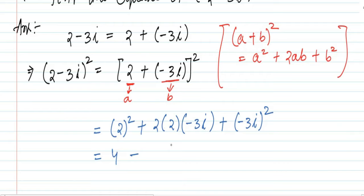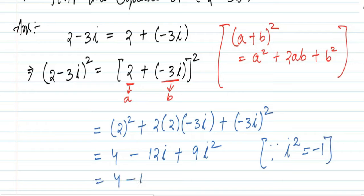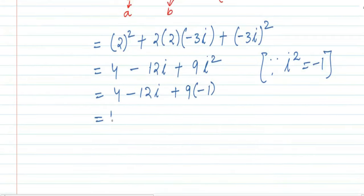...minus 2 × 2, that is 4, plus 3 — so minus 12i — plus (−3)² which is 9i². We know i² equals minus 1, so 4 minus 12i plus 9 × (−1) equals 4 minus 12i minus 9, which equals 4 minus 9, giving us minus 5 minus 12i.